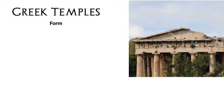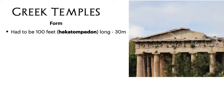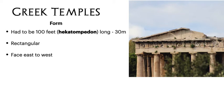What I'm going to talk about is the form of a Greek temple, or what it looks like and how it's made up. Greek temples needed to be what was known as a hecatompedeon, which is a unit of measurement which was 100 feet, and that equates to 30 meters long. They were mainly rectangular, and they generally faced with their front door looking to the east and the back to the west.